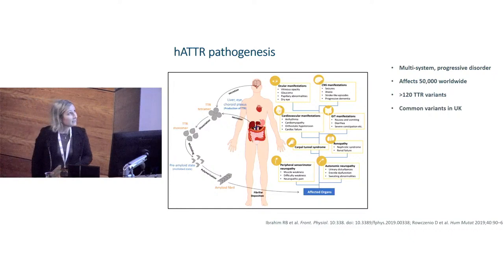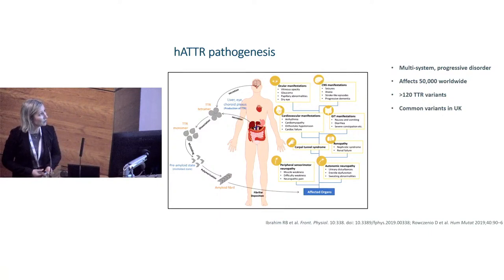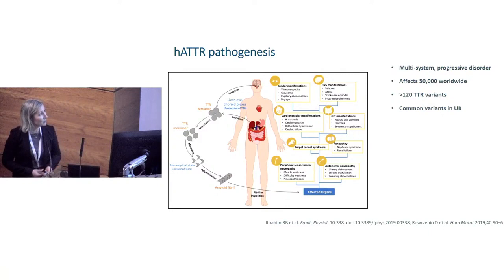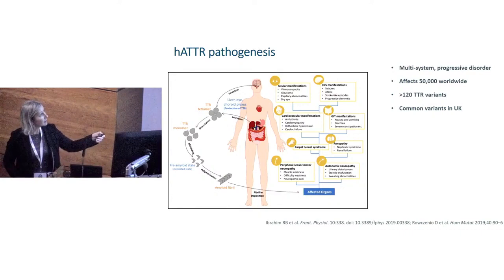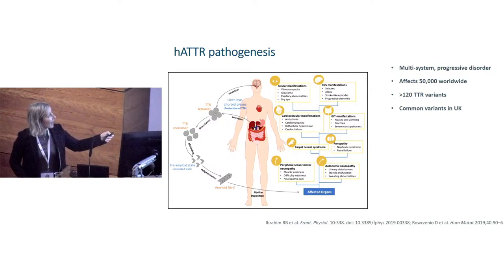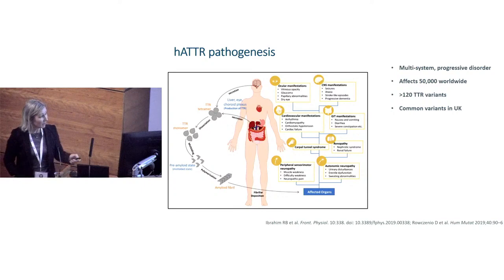The trans-thyretin protein is made in the liver and secreted into the bloodstream and CSF. The variant protein tetramer dissociates to become the monomer, misfolds, and polymerizes to become amyloid fibrils, which are ultimately deposited. The clinical manifestations largely depend on the site of amyloid deposition in the various organs, but classically affect the heart and the nervous system. There are more than 120 variants described globally, but in the UK we have common variants — in Scotland and Ireland particularly, we see the T88 variant, which is the commonest in our population.